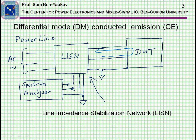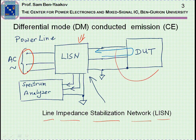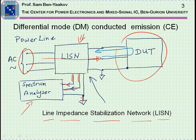If we have such an emission, we like to measure it, and the setup includes a unit which is called LISN — Line Impedance Stabilization Network. This LISN actually sits between the AC line and the device that we are testing, sort of feeding the line through it. It has two outputs, one of which goes to a spectrum analyzer. This is a typical setup for measuring the conducted emission.